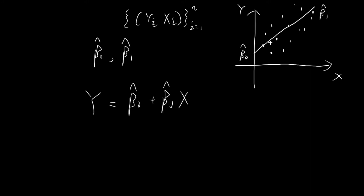Now that I've drawn this line, I can consider the coordinates of points lying on the line as well as the coordinates of our individual data points. Let's say this first data point has coordinates (x₁, y₁). I can consider a corresponding point on the line with the same x-coordinate — this point has coordinates (x₁, ŷ₁), where ŷ₁ is the y-coordinate on the regression line, and y₁ is the actual observed y-coordinate of the data.